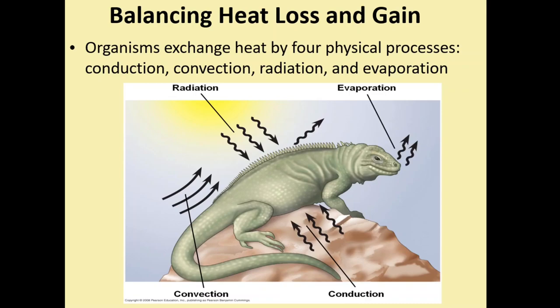Evaporation comes at a cost — you will also lose water when you undergo evaporation. For a desert animal, balancing heat loss through evaporation while not losing too much water is very serious, linking back to osmoregulation. So the four physical processes of heat exchange are: radiation — you can gain and lose heat; convection — gain and lose heat; conduction — same; and evaporation — you can only lose heat through evaporation.